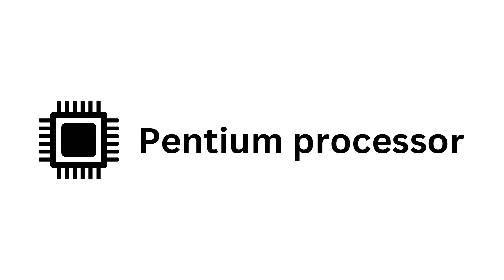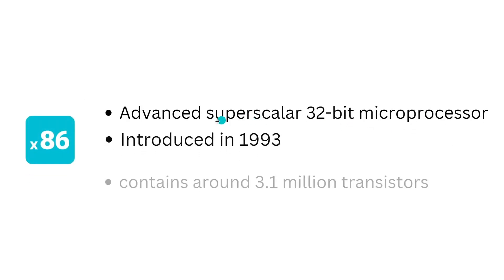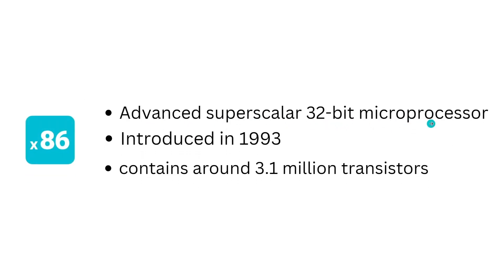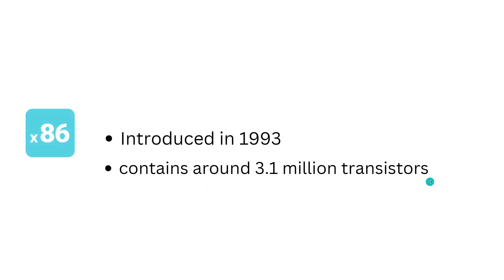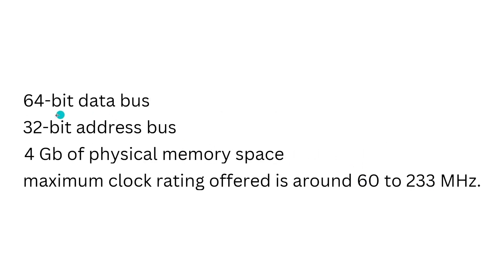The Pentium microprocessor is one of the powerful family members of Intel's 86 microprocessor. It is an advanced superscalar 32-bit microprocessor introduced in the year 1993 that contains around 3.1 million transistors. It has a 64-bit data bus and a 32-bit address bus that offers 4 gigabytes of physical memory space, while the maximum clock rating offered is around 60 to 233 MHz.